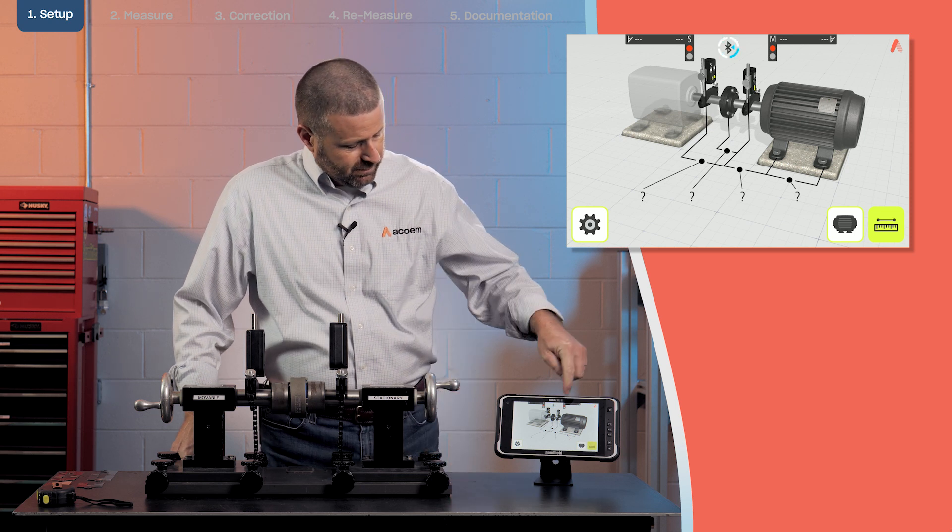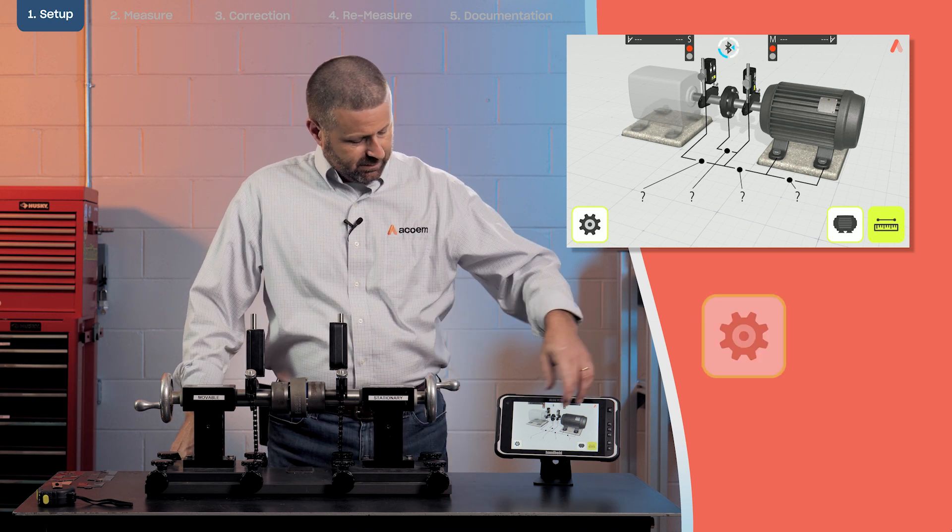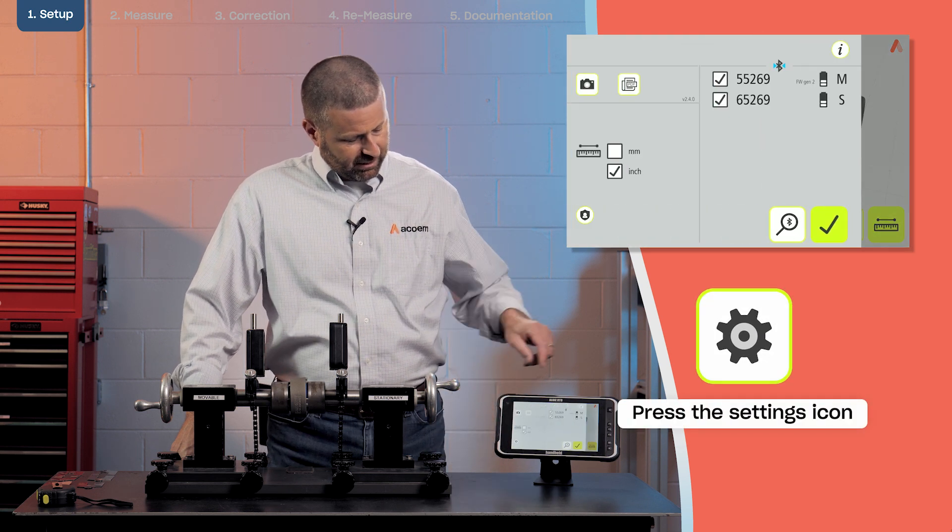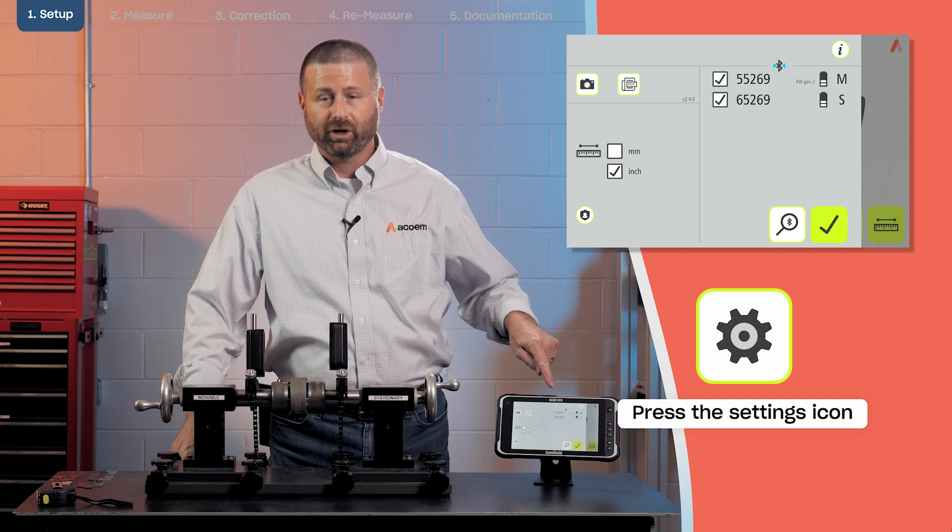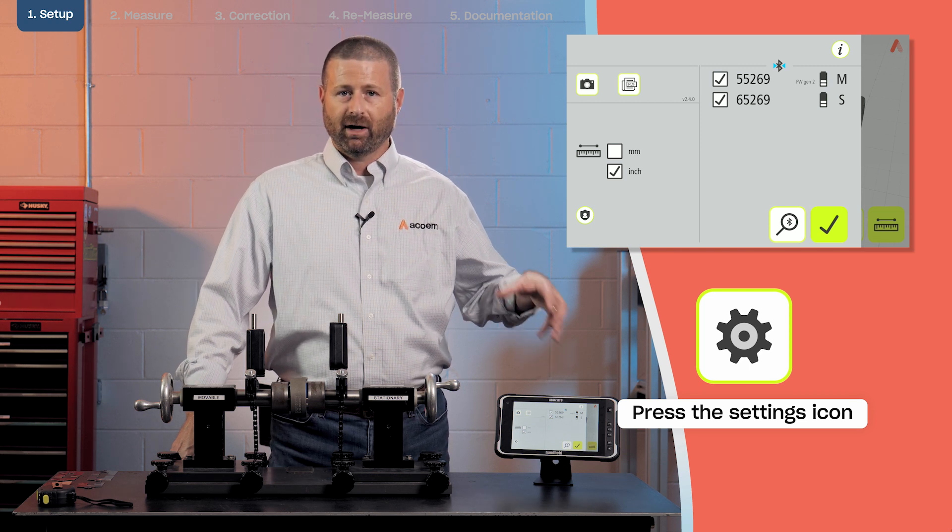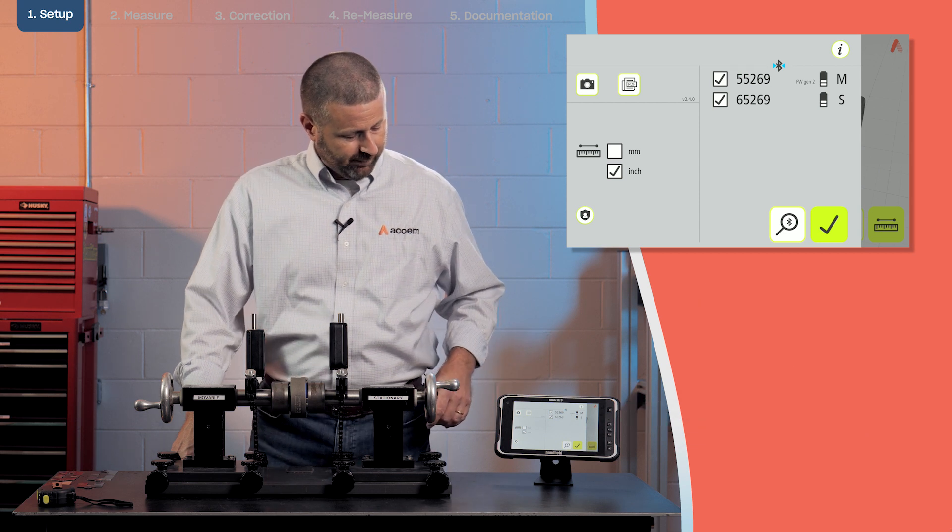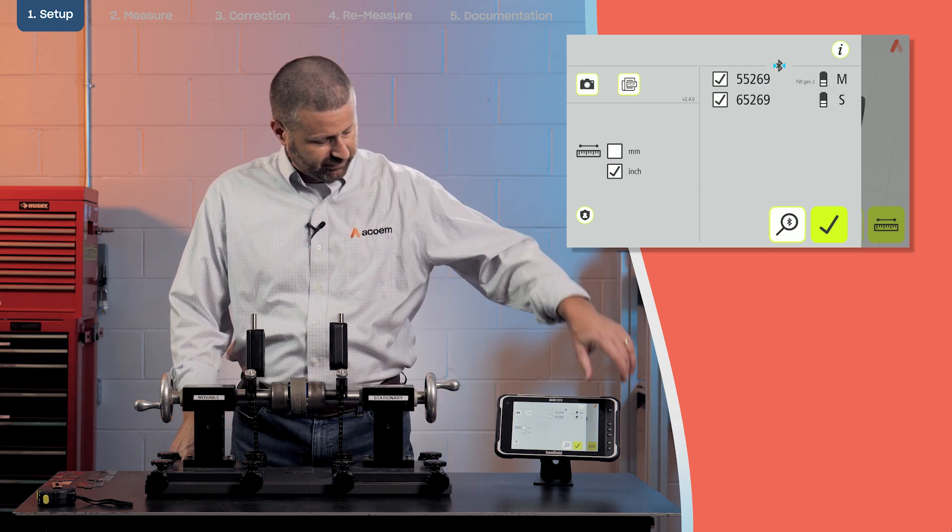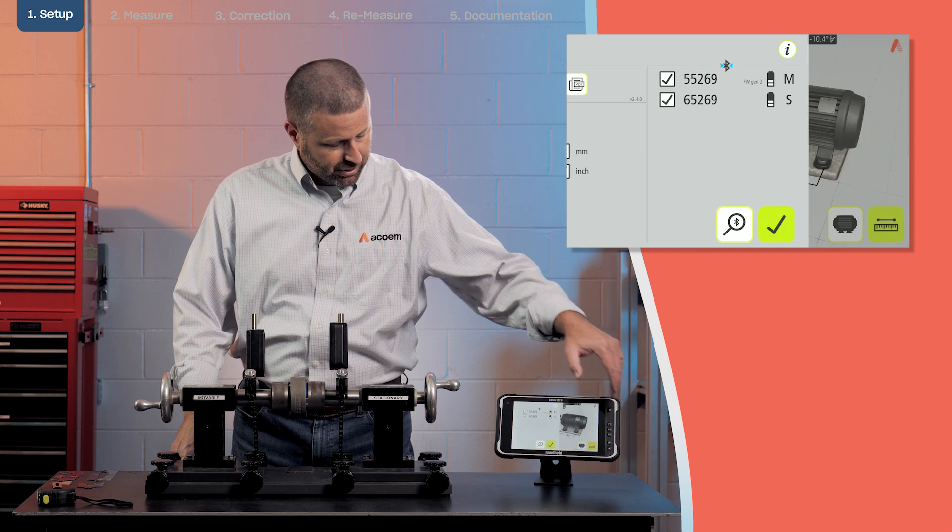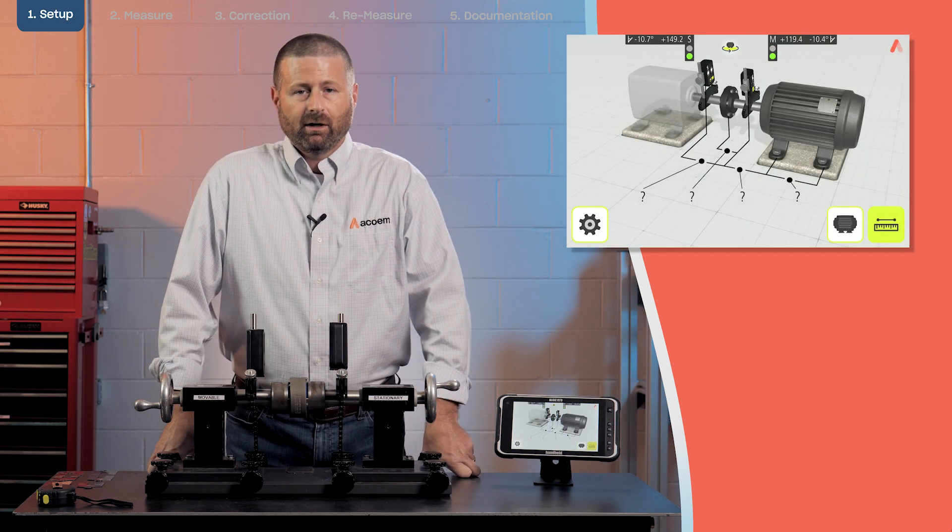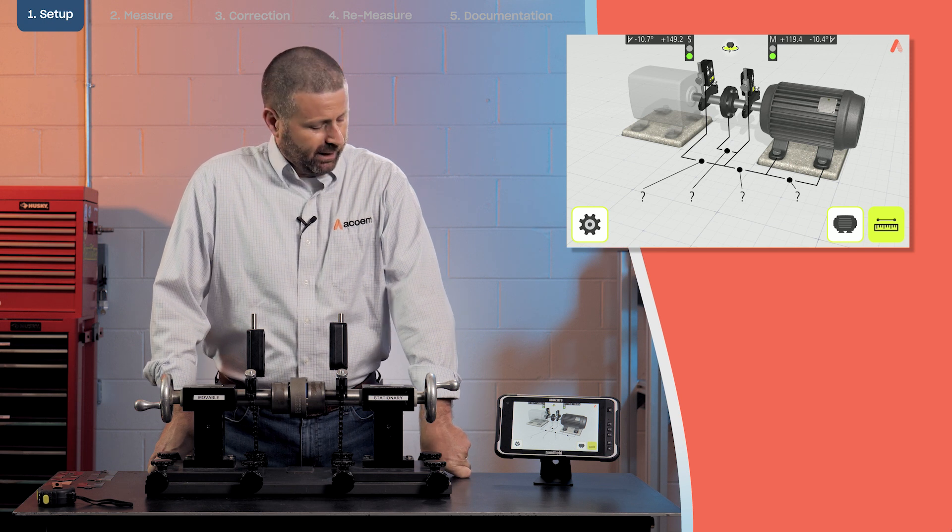You can see that the display unit is searching for the sensors. If we touch on the settings icon, we can look and confirm that my sensors are indeed connected. You see the check boxes are complete on the sensor serial numbers. This generally only has to be done the first time you use the unit and after that they connect automatically.